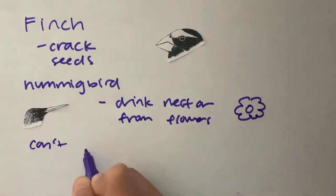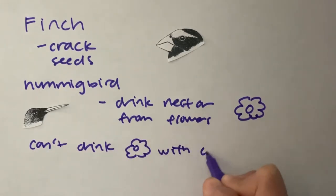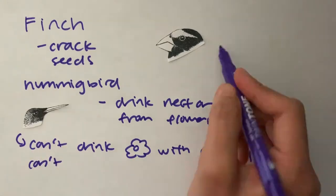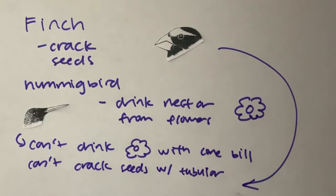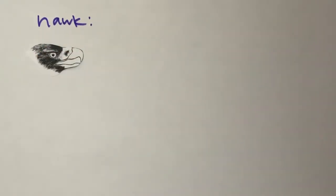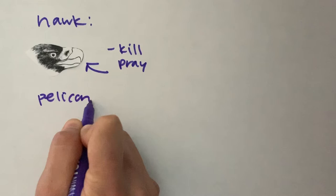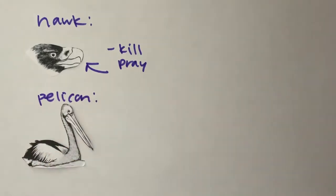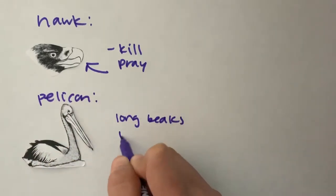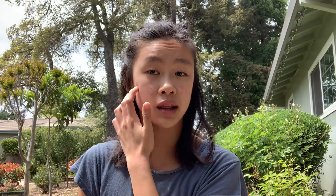If hummingbirds had cone bills they would not be able to get the nectar they need and if finches had tubular bills they would not be able to crack the seeds that they need to eat. Hawks and eagles have hooked-shaped bills that help them kill and eat their live prey.